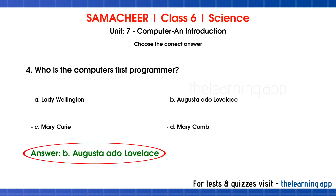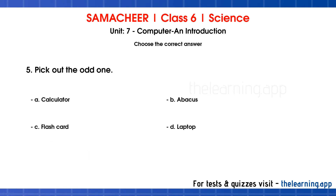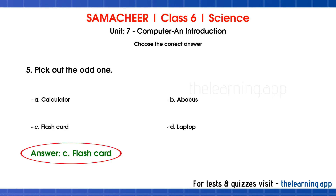Fifth question: Pick out the odd one. Options are A. Calculator, B. Abacus, C. Flashcard, D. Laptop. The correct answer is Option C, Flashcard.